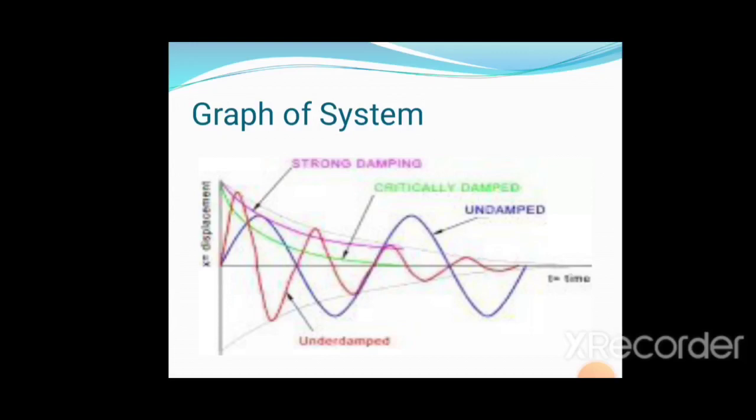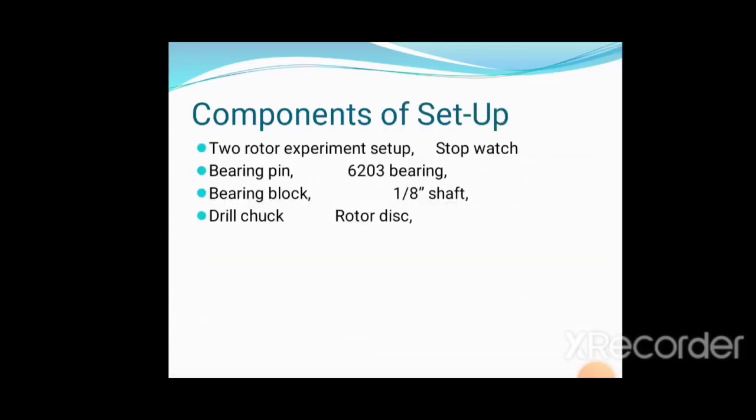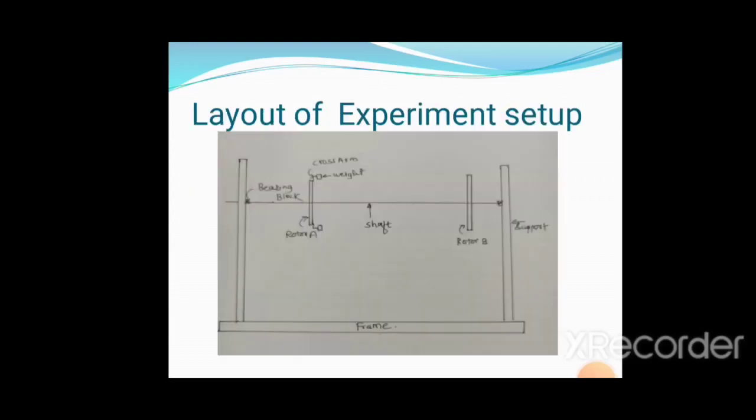The setup components for this experiment include two rotors, stopwatch, bearing pins, 603 bearings, bearing blocks for support, shaft of 3mm diameter, drill chuck, and rotor discs. The layout shows the shaft supported at two sides with bearings, having two discs: rotor A and rotor B with masses attached via arms and bearing blocks at the bottom for support.